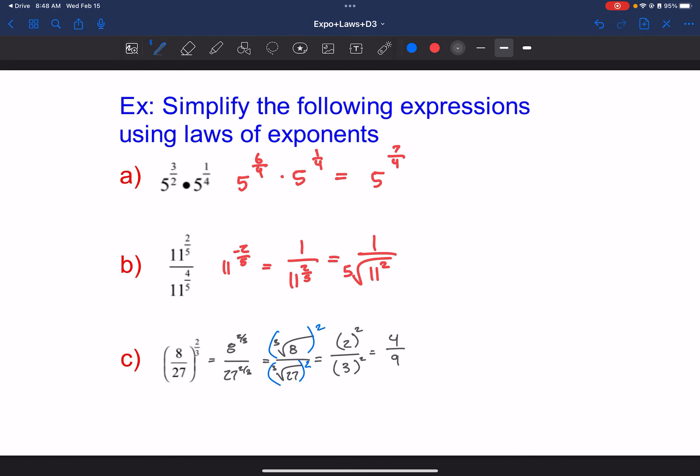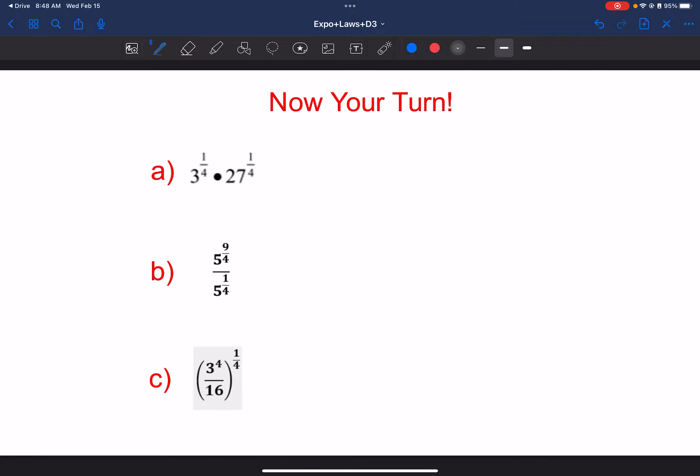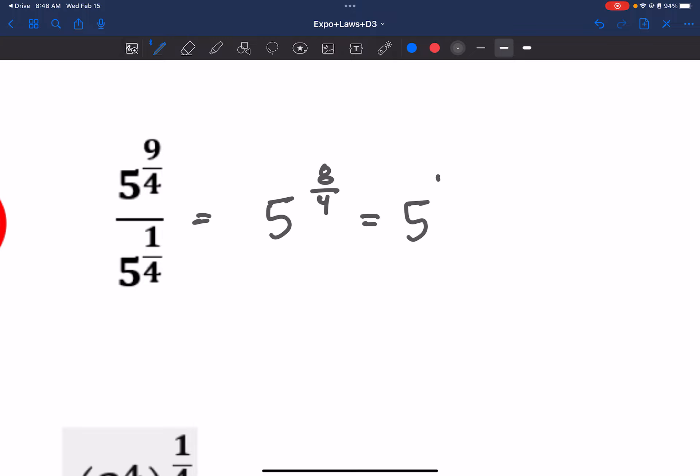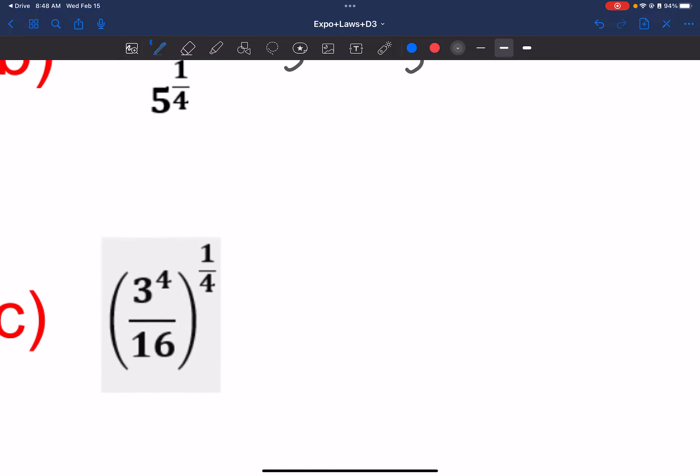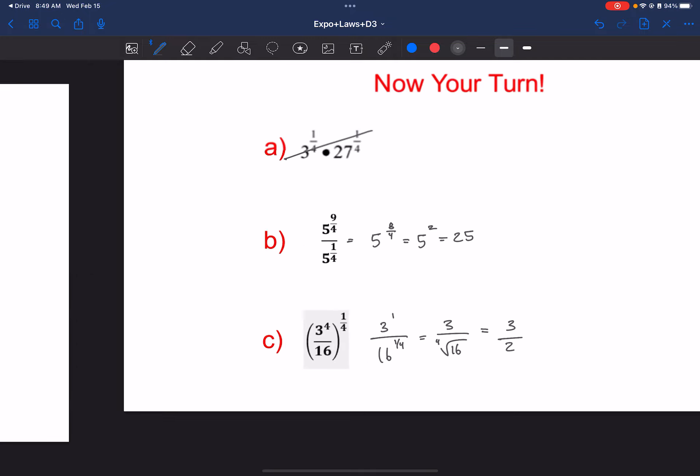So yeah, that's kind of our process for this. Let's try some more really quick. Now we're not going to worry too much about this one. But this one here, this is just going to subtract the exponents. So I'd have 5 to the 8 over 4. Well, 8 divided by 4 is 2. So I just have 25. Or something like this. This would be power to power. So I'd have 3 to the 1 over 16 to the 1 4th. Well, that's really 3 over 4th root of 16. 4th root of 16 is just 2. So we end up with something like that.